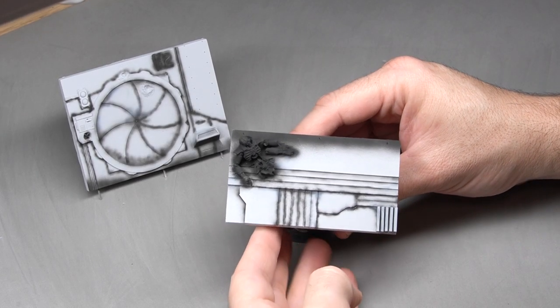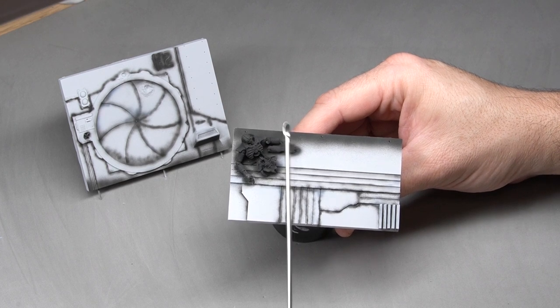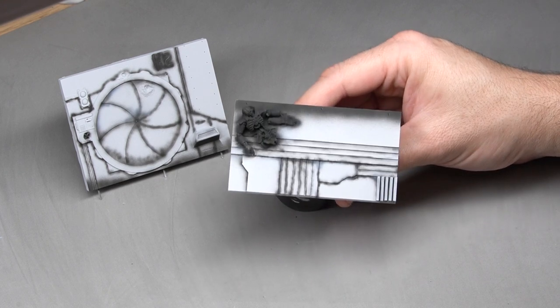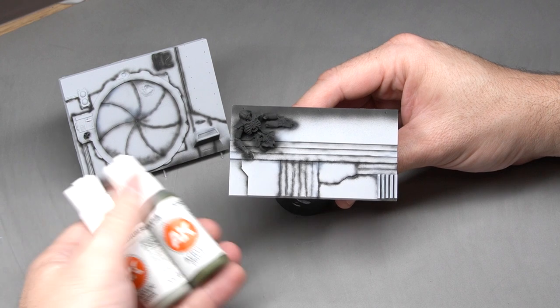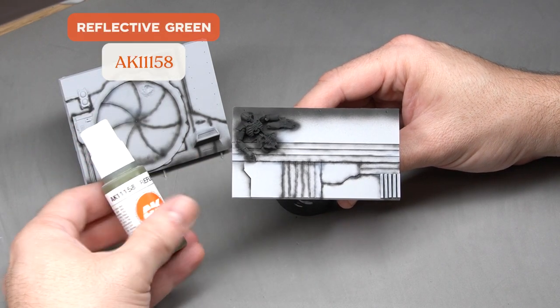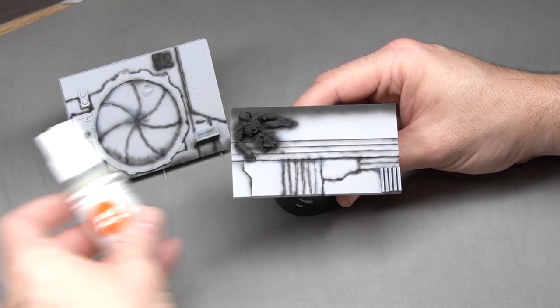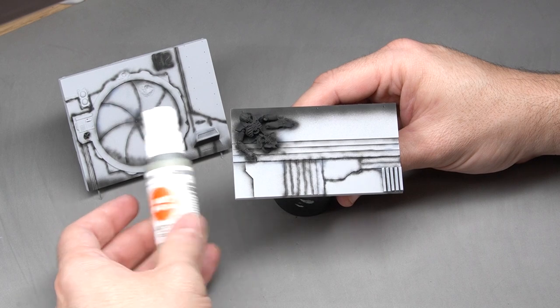As you can see, we've done a very simple, quick pre-shading to save time, and now we're going to start applying a greenish color. We'll begin with reflective green diluted enough so as not to lose the pre-shading, and we'll highlight with medium sea green.